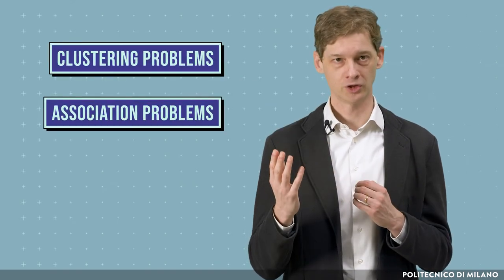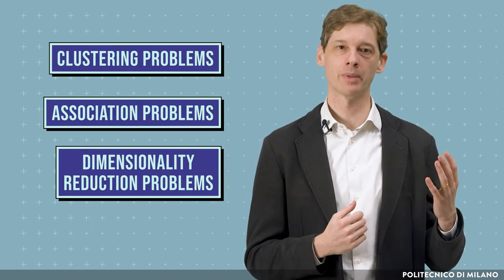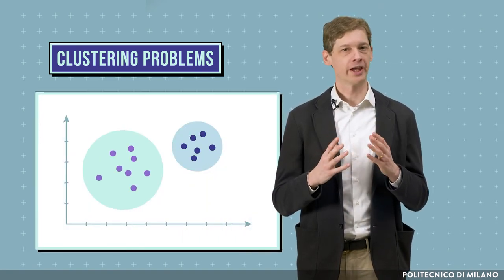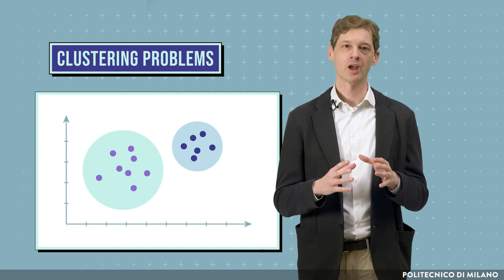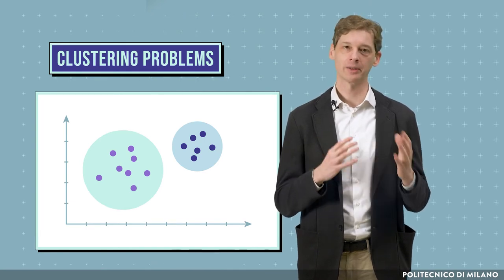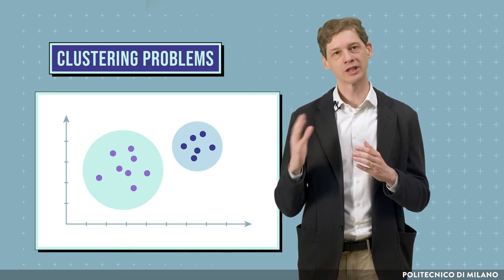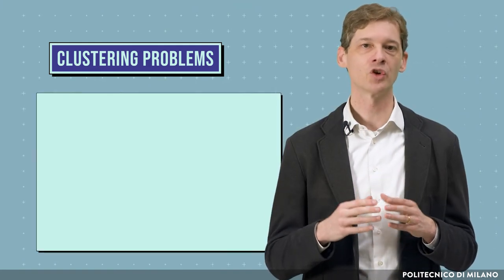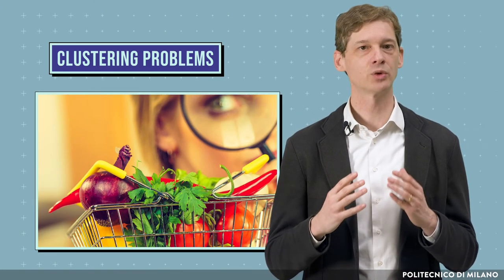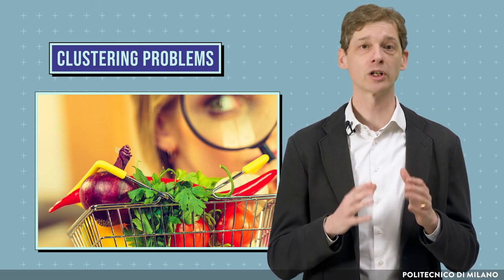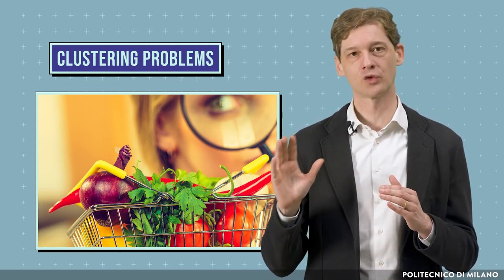Unsupervised models can be further grouped into clustering, association, and dimensionality reduction problems. In clustering problems, we want to unveil the inherent groupings in the data. A cluster is a collection of objects that are similar to each other and dissimilar to objects belonging to other clusters. For example, in retail stores, clustering can be used to group customers according to their purchasing habits, in order to devise a separate business strategy for each group.